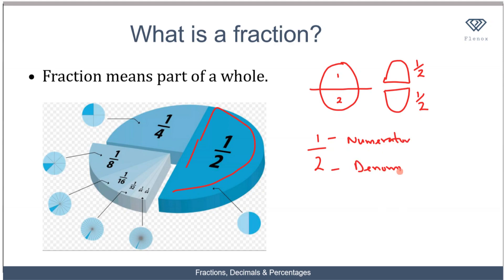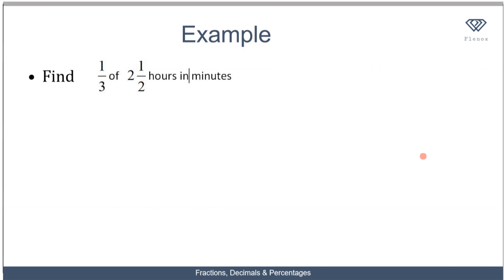Let's look at an example. You are told to find one third of two and a half hours. Two and a half hours is what we are trying to share, and we are trying to get one third of it — think about the answer in minutes. There are two ways to go about this.